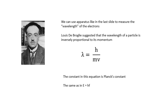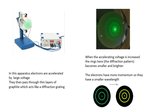This guy here, Louis de Broglie — spelt de Broglie but pronounced de Broglie — Prince Louis de Broglie. Basically, we can measure the wavelength of the electrons. He suggested that the wavelength is inversely proportional to its momentum. So lambda equals h over mv — that's de Broglie's equation. The constant h is Planck's constant, the same one as in E equals hf. So if the electrons have more momentum, they have a smaller wavelength.